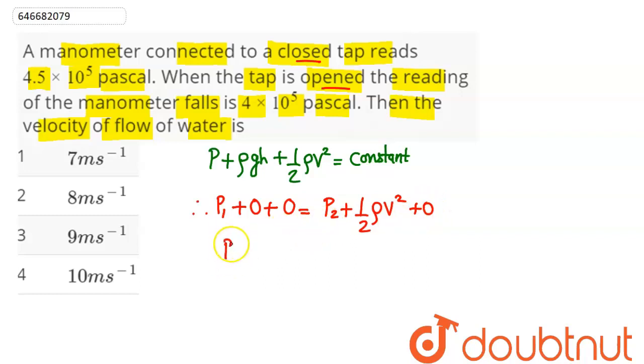So this comes out to be p₁ - p₂ = ½ρv². Hence,